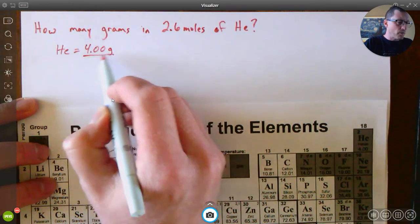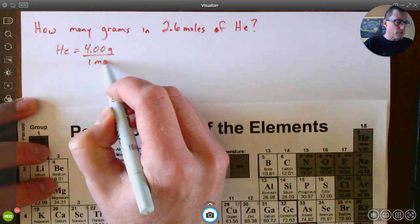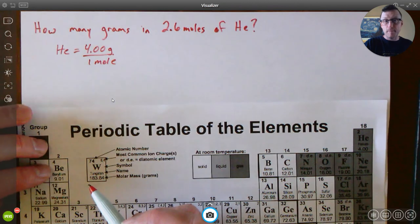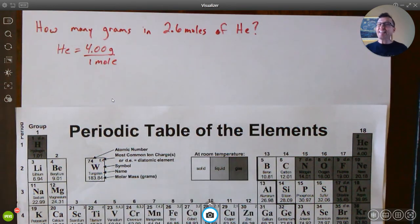So I find He in the periodic table and it says He equals 4.00 and that's grams per mole. I'm going to say grams per one mole. That's telling me if we had one mole, how many grams would it be.